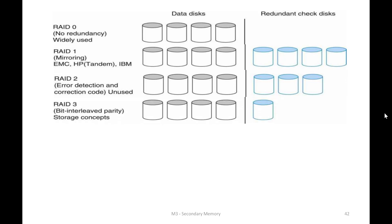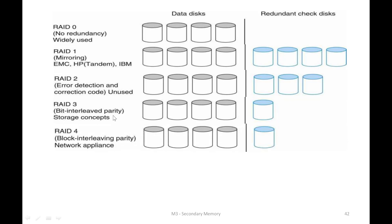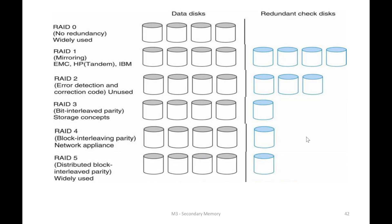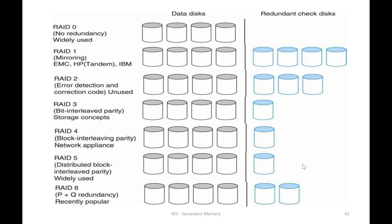RAID3 is bit-interleaved with parity check, and to store the parity bits we need one extra disk. RAID4 is an extension of RAID3 with block-level interleaving along with parity. RAID5 is like RAID4 but the parity is not stored in a single disk — it is spread across all 5 disks. RAID6 adds a checksum feature along with parity, accordingly needing 2 extra disks to store the parity and checksum alongside the 4 data disks.